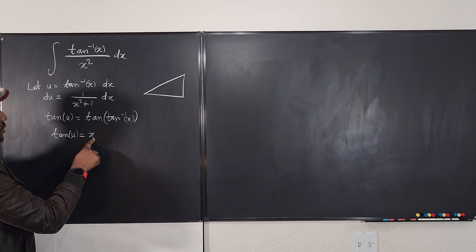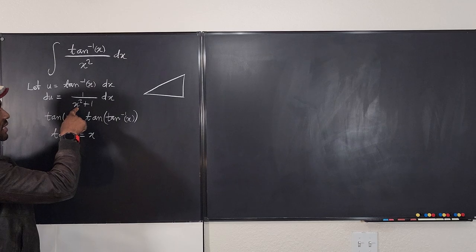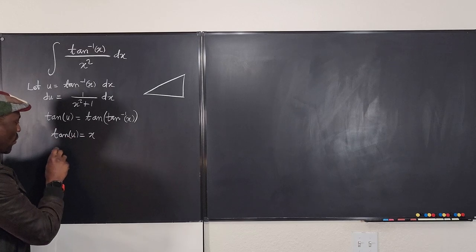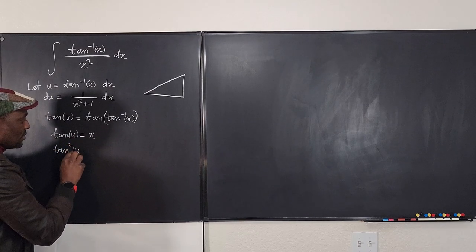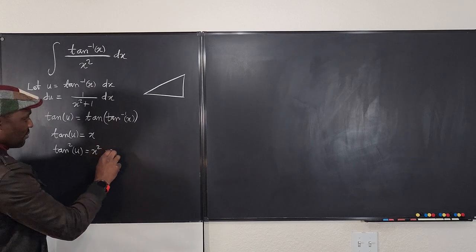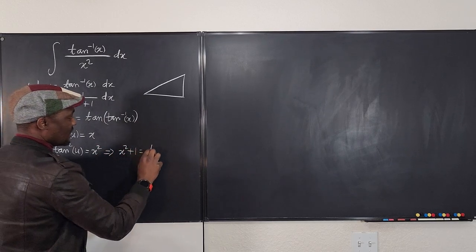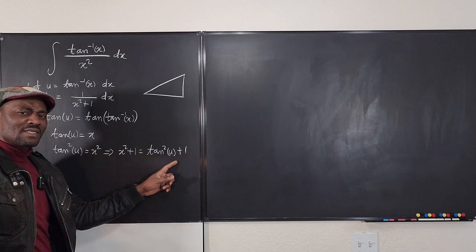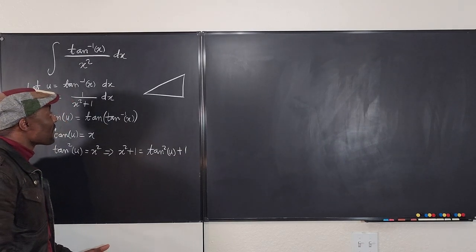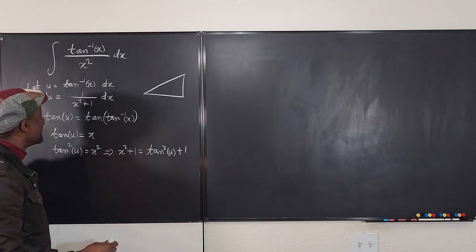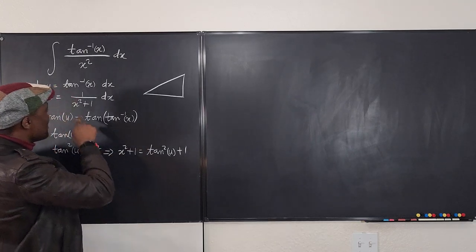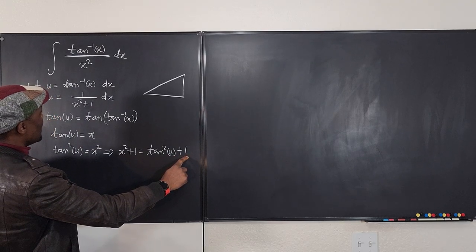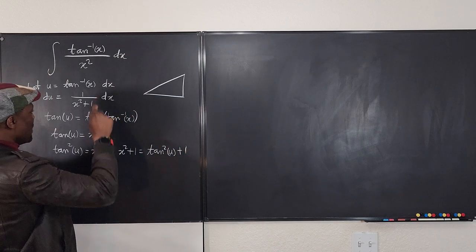Since x = tan(u), we can write x² = tan²(u), which means x² + 1 = tan²(u) + 1. Do we know what tan²(u) + 1 equals? Yes — that's secant squared u. So x² + 1 can be replaced with sec²(u), and the problem is gradually getting solved.